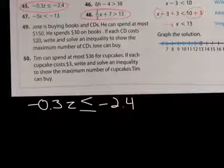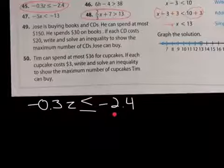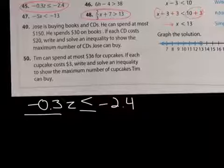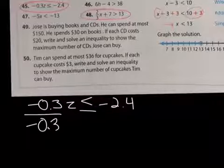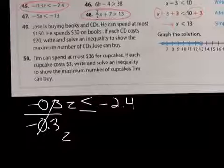So for 45, we have negative 0.3z is less than or equal to negative 2.4. Let's isolate the variable by using the division property of inequality. So I'm going to divide it by the same number, negative 0.3. That's gone, and I'm left with my z is less than or equal to, and I divide this side out also by a negative.